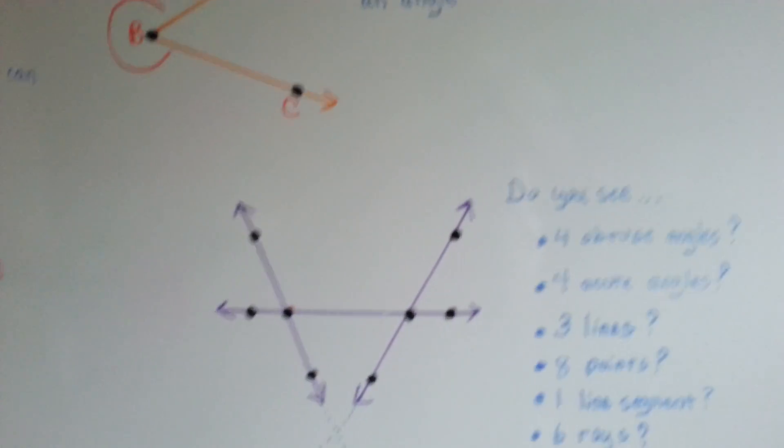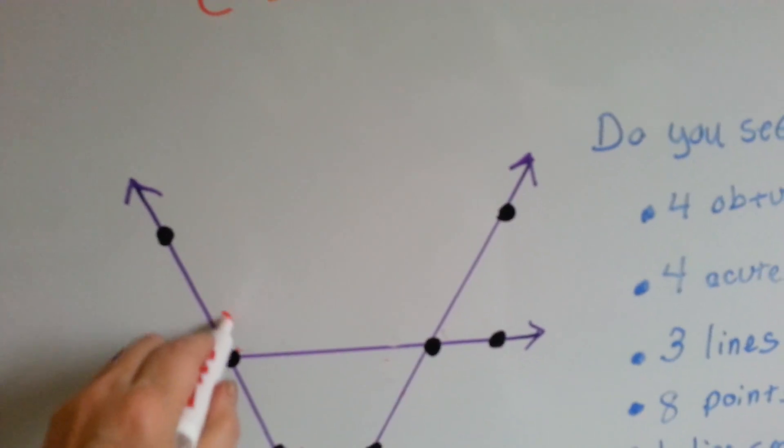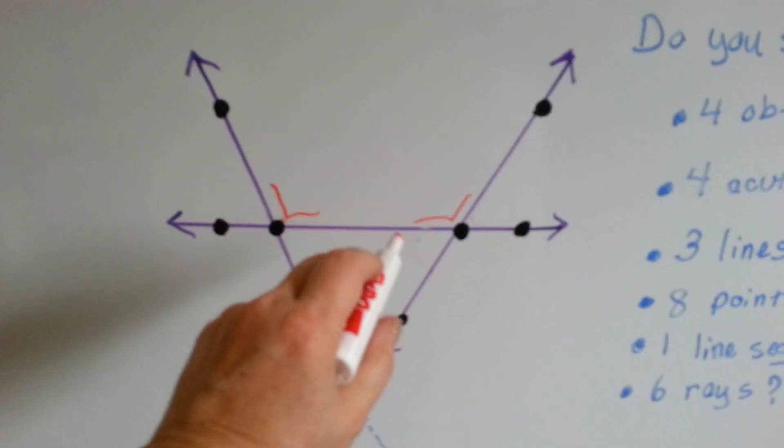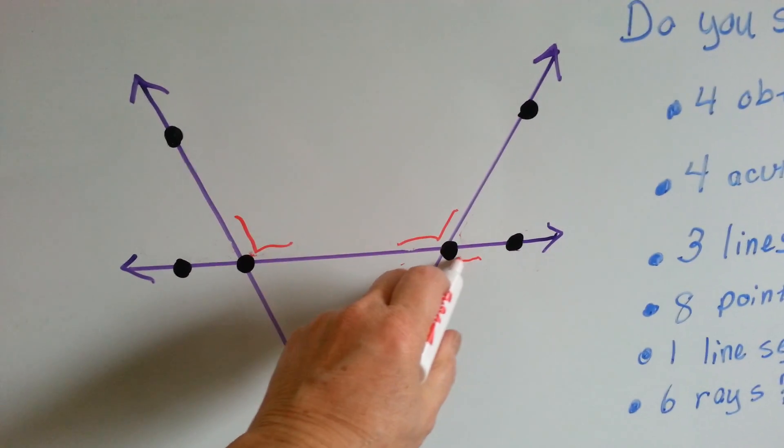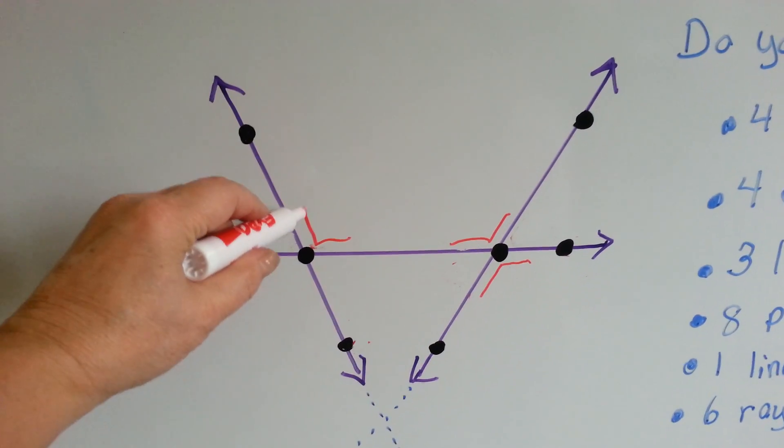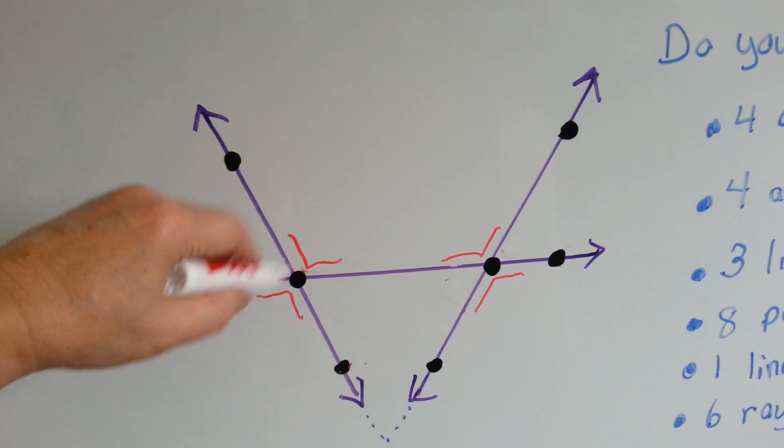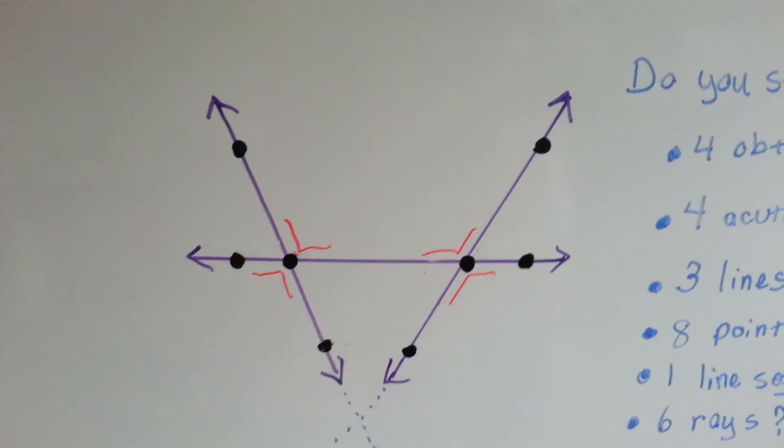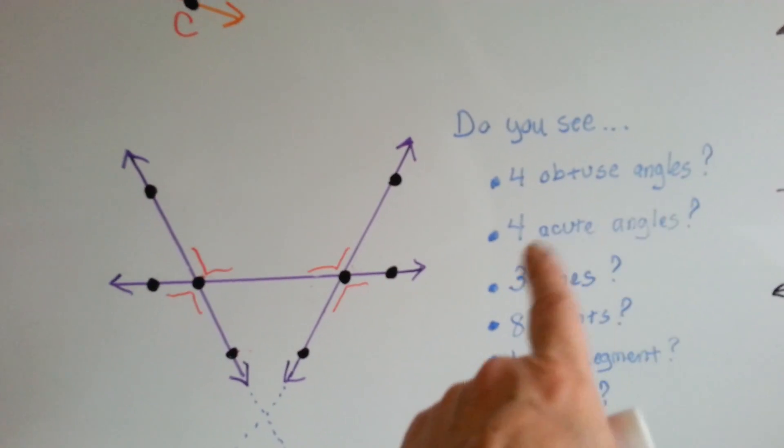So, do you see four obtuse angles? Well, there's one here. There's one here. And the way angles work is, if there's an obtuse angle here, the one on the other side is going to also be obtuse. So, can you see the one for this one? It's right on the other side of it, isn't it? See how they're across from each other like that? Yeah, angles do that. That's what happens in geometry. So, those are our four obtuse angles.